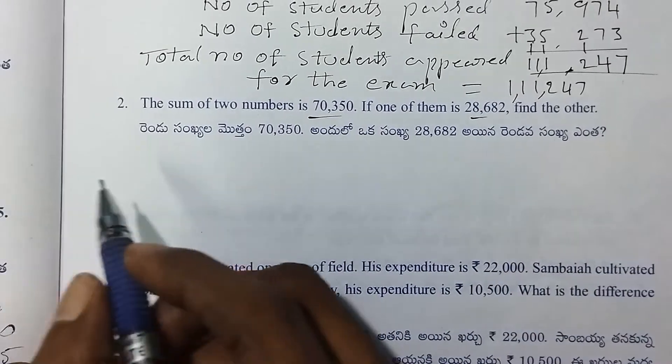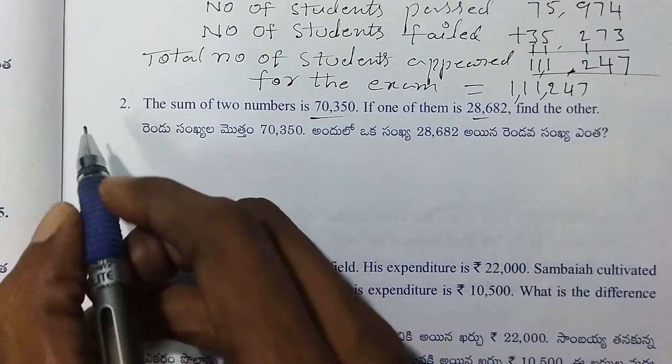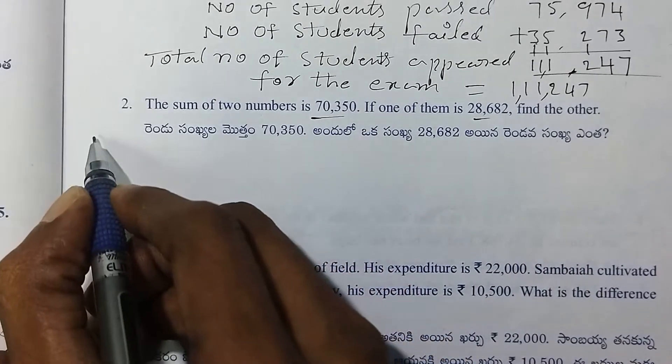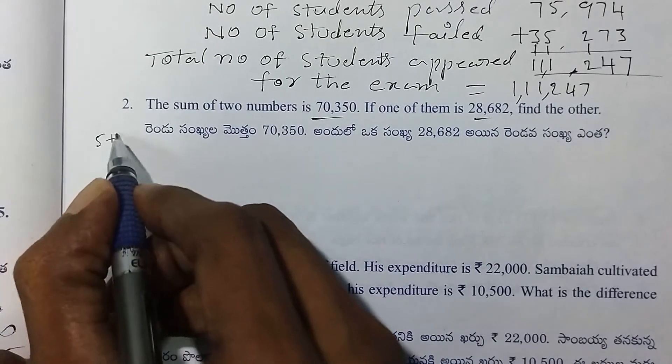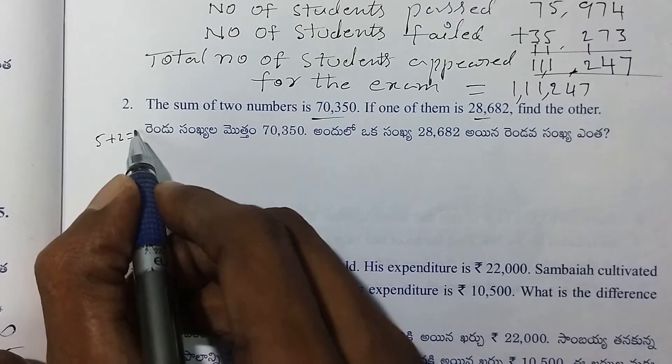Show me: the sum of the two numbers is given. 5 plus 2 is 7.